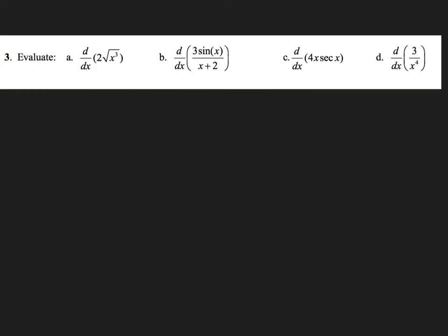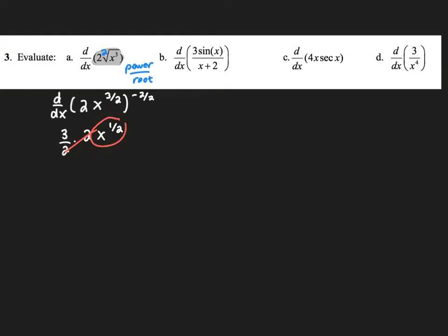Question 3 has us doing various derivatives using various rules. This first one is a power rule, but it has a radical, so I first need to rewrite it as a fractional exponent — power over root, so third power over 2. Now I do the power rule: bring down the power, multiply it times the 2 that's already there, and subtract 1 from the exponent — thinking of 1 as 2/2 gives me a 1/2 power. I can cross out the 2s, and if I want to take that back to square root notation I can. That's my derivative.